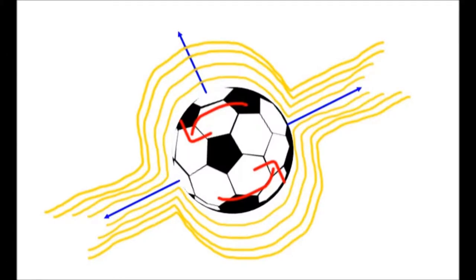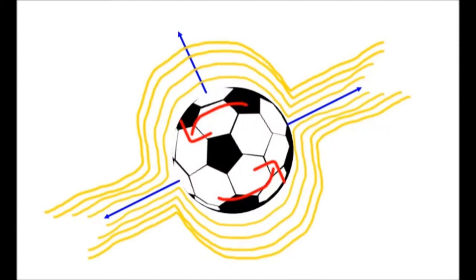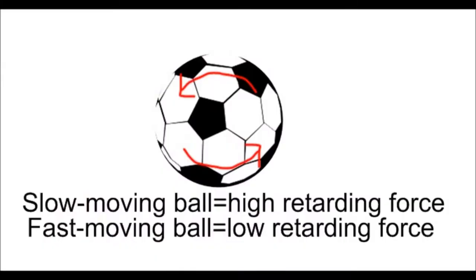The two general forces acting on a soccer ball spinning through the air are the lift force and the drag force. The lift force is the upward or sideward force causing the Magnus effect. The drag force acts in the opposite direction to the path of the ball. The coefficient of drag depends on the velocity of the ball, and drops suddenly when the airflow at the surface changes from smooth to turbulent. A slow moving ball experiences a much higher retarding force.